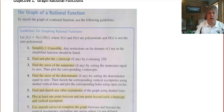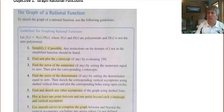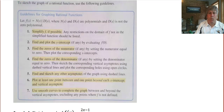The first thing you want to do with a rational function is simplify it. Frequently that's going to mean factoring and working with the factors of that function. It'll also be helpful to note any restrictions on the domain, and that kind of ties into finding the vertical asymptotes as well.